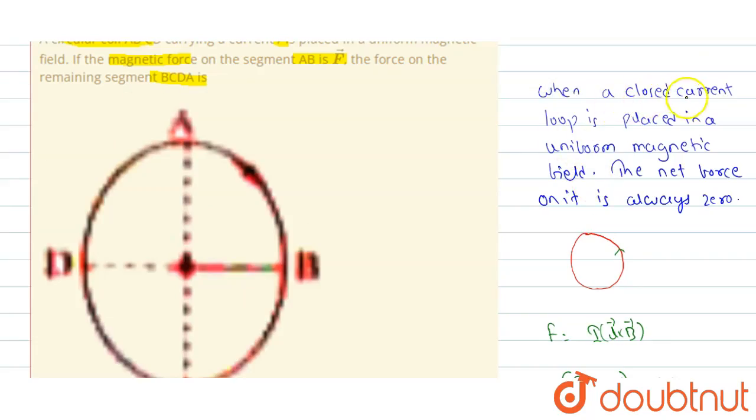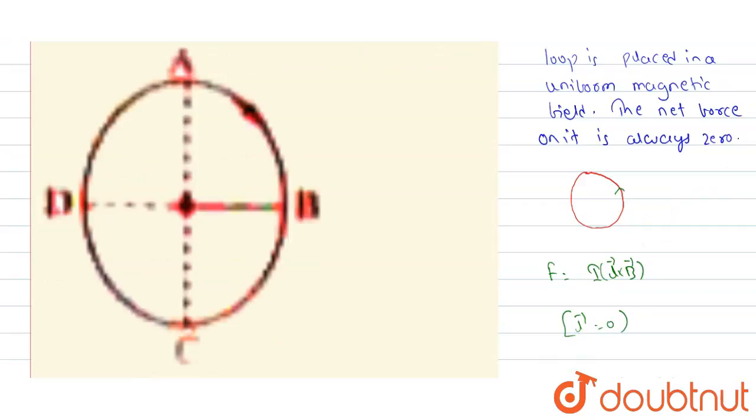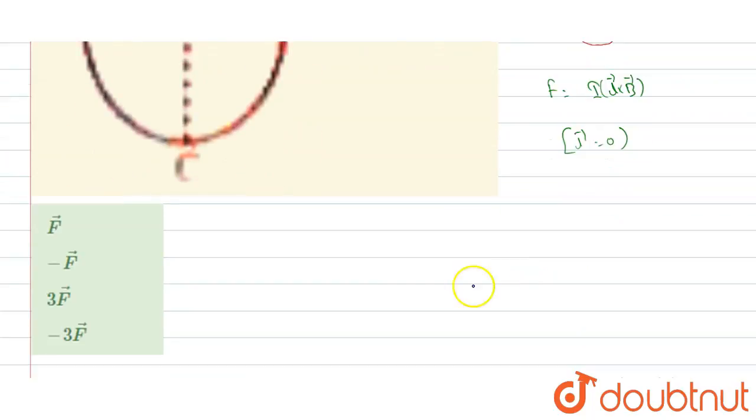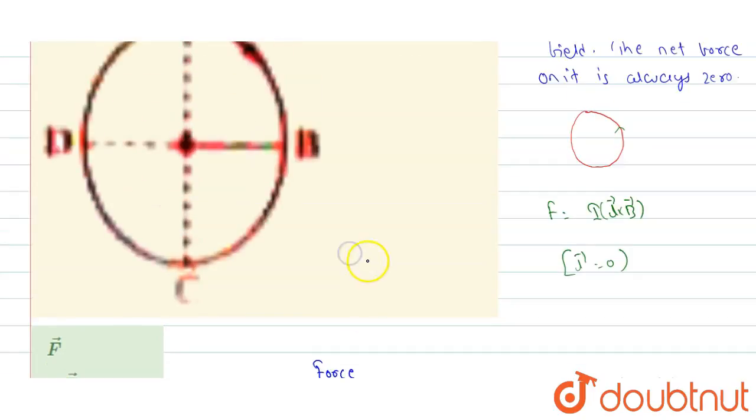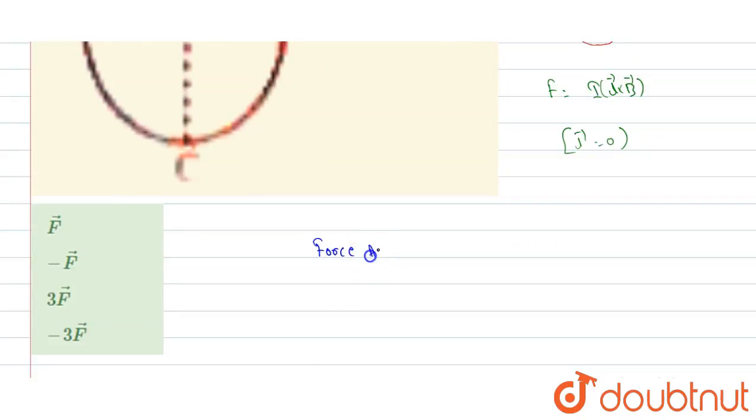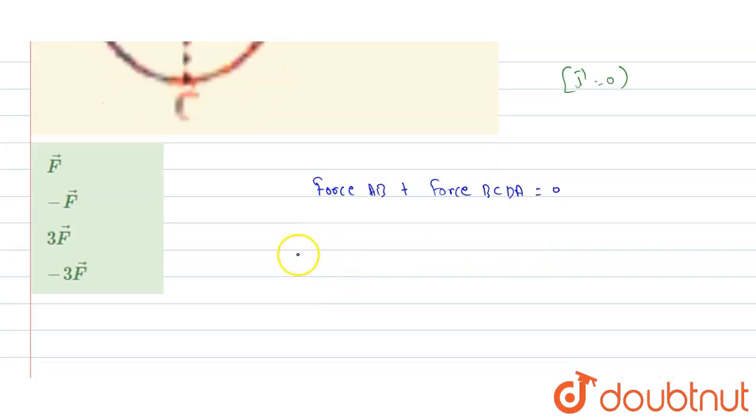So we can say, students, when a closed current loop is placed in a uniform magnetic field, the net force on it is always zero. Therefore, the force on AB plus the force on BCDA would equal zero.